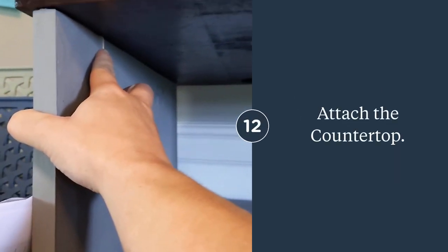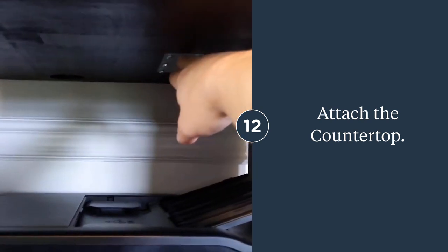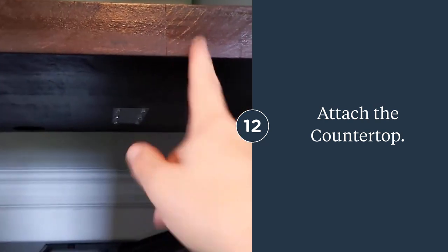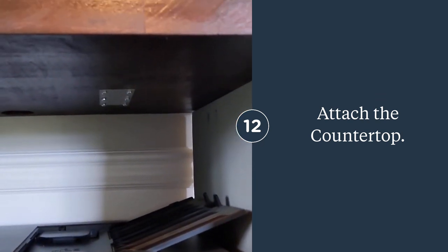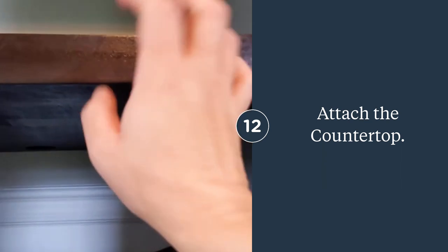As you can see, I added pocket holes here and here. I also had to add some extra support here because this is two pieces of butcher block that we shaved off from our desks. We didn't have a big enough piece without buying another piece of butcher block, so this saved us a little money.